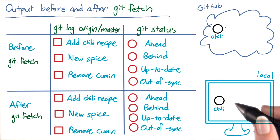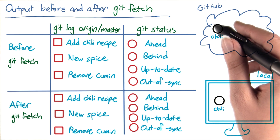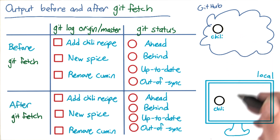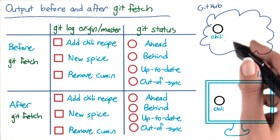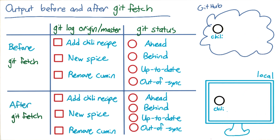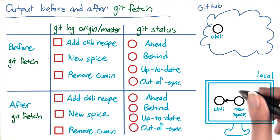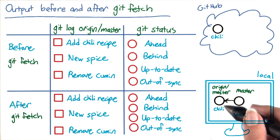To answer this question, let's think about what commits were present on GitHub and in your local repository before and after git fetch. When you cloned the repository, the latest commit on it was Larry's commit adding the chili recipe, so that also became the latest commit in your local repository. There were other previous commits, but I'm leaving them out here for the sake of space. Now you made a commit adding a new spice, so that commit is also present in your local repository. That's where your master branch is. Origin slash master still points to the commit that was on the remote at the time that you cloned.